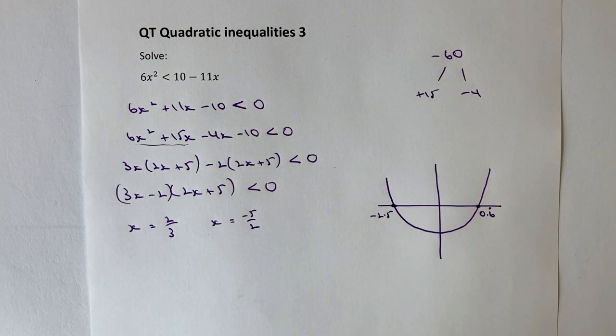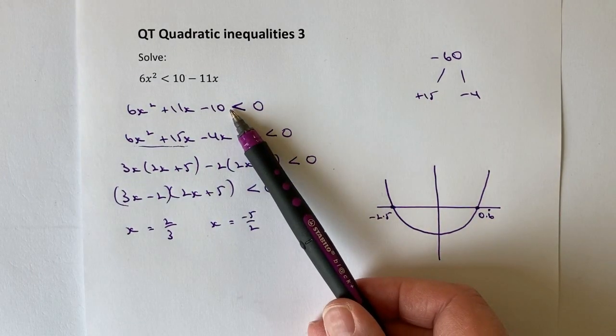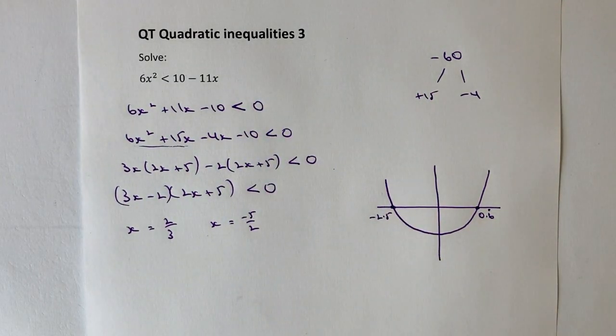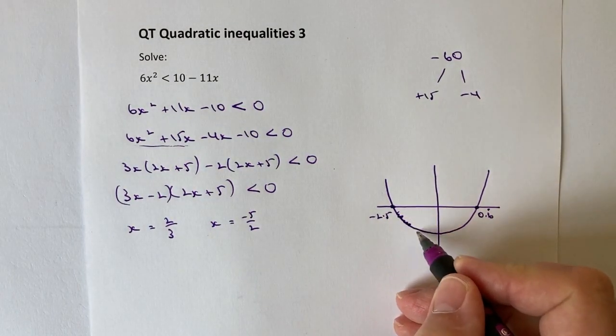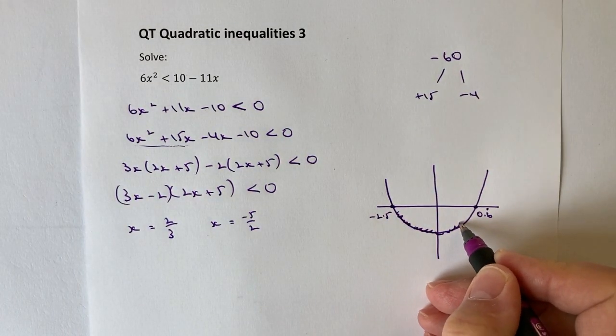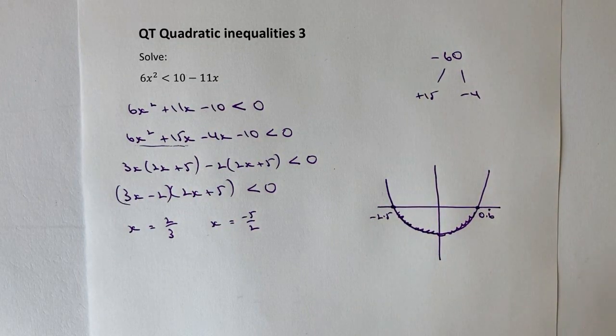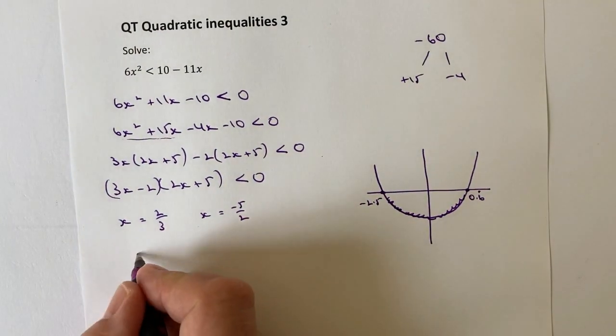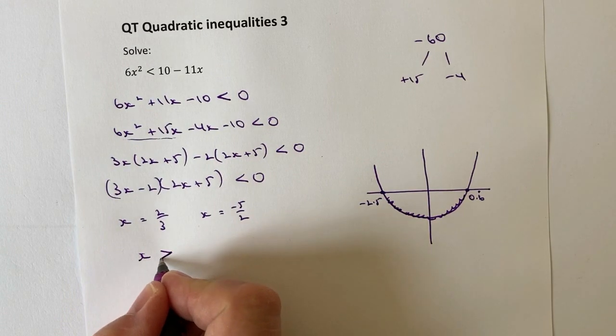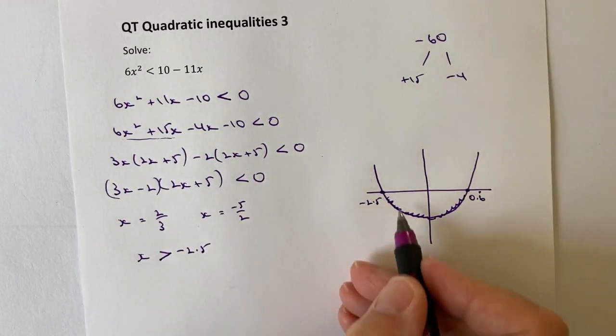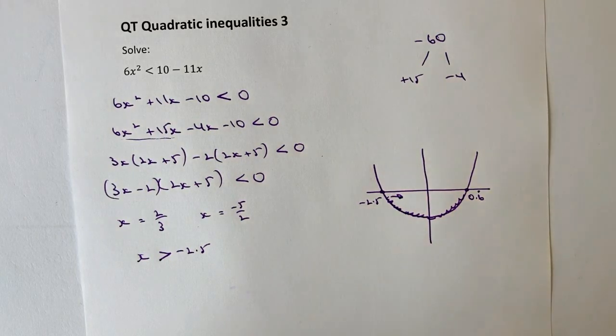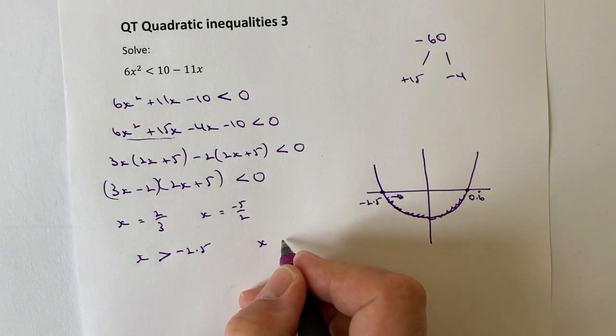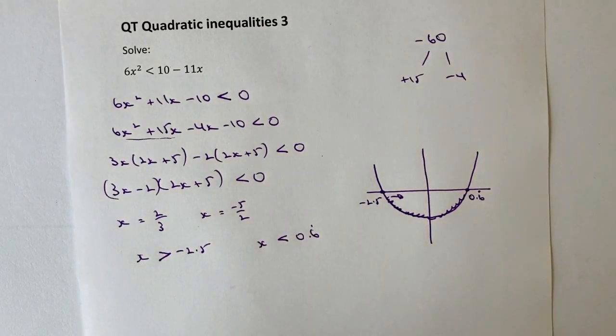And what we're saying is that the values of the inequality are less than zero. So, the bit I'm interested in is this bit around here. It's all of these values between minus 2.5 and 0.6 recurring. So, what we can say is that, to answer the question, that x is greater than minus 2.5. In other words, it's all these values on the right hand side until the limit is reached where x is going to be less than 0.6 recurring, which is this set of values over here.